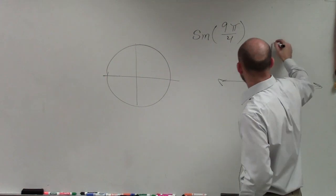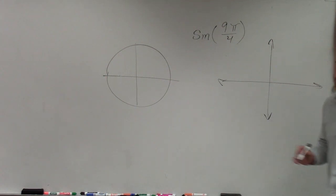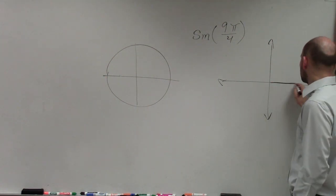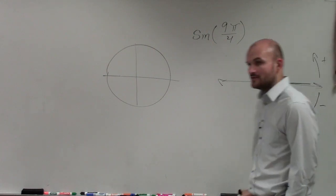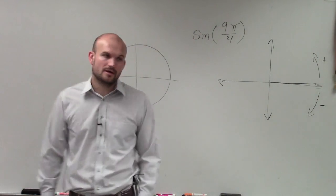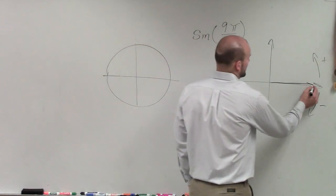When graphing 9π over 4, remember we always start with our initial side. If the angle is positive, we go in the counterclockwise direction. If the angle is negative, we go in the clockwise direction.